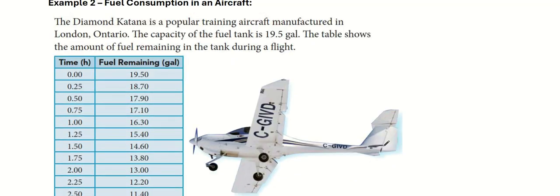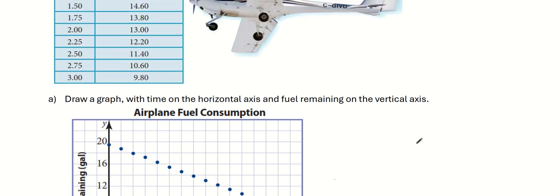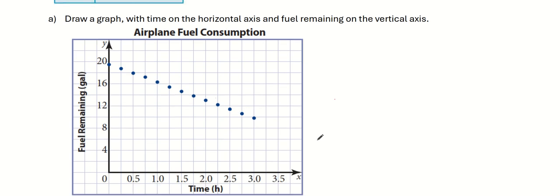Let's look at the next problem. We have an aircraft here — the Diamond Katana, a popular training aircraft manufactured in London, Ontario. The capacity of the fuel tank is about 19.5 gallons. The table shows the amount of fuel remaining in the tank during the flight. I put the graph here. You can see it's a linear graph going downwards — so it's decreasing. Anything that's straight is linear, so this is a linear graph going downwards.